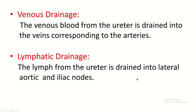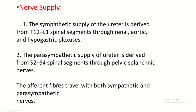Venous drainage: venous blood from the ureter drains into veins corresponding to the arteries. Lymphatic drainage: lymph from the ureter drains into the lateral aortic and iliac nodes. Nerve supply: the sympathetic supply is derived from the T12 to L1 spinal segments through the renal, aortic, and hypogastric plexuses. The parasympathetic supply is derived from S2 to S4 spinal segments through the pelvic splanchnic nerves. Afferent fibers travel with both sympathetic and parasympathetic nerves.